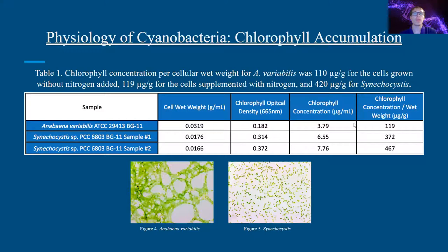While studying the physiology of Anabaena variabilis, chlorophyll concentration was evaluated relative to the cell's wet weight. Based on the chlorophyll extraction absorbance measurements, the chlorophyll concentration per cell wet weight for Anabaena variabilis was significantly lower than that of the Synechocystis unicellular reference strain, which shows that A. variabilis is developing heterocyst cells which carry less pigment than a vegetative cell.